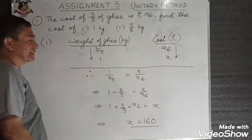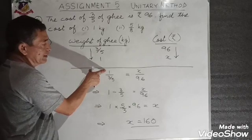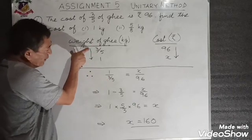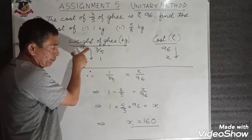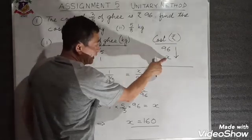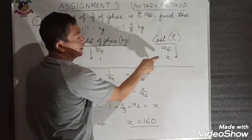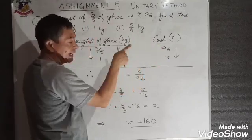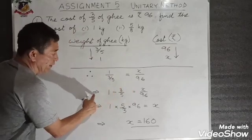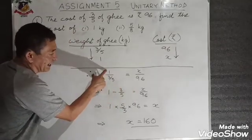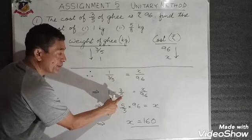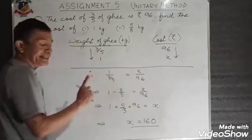Now using these arrows — arrowhead upon the arrow tail from the first column equals arrowhead upon arrow tail from the second column. Therefore, 1 divided by (3/5) is equal to x upon 96.